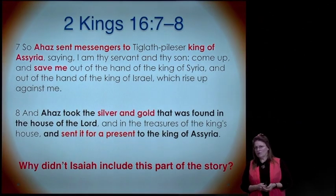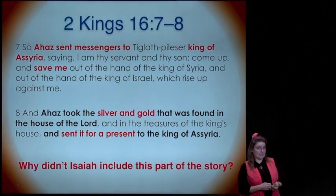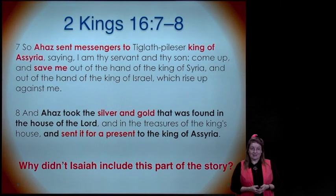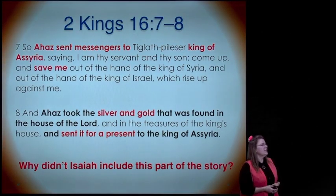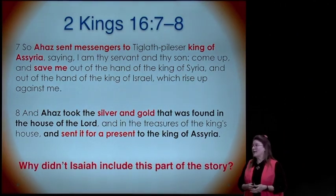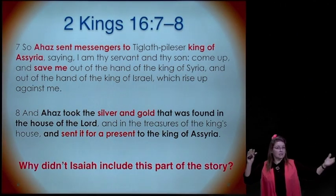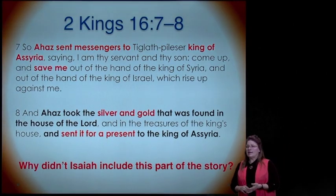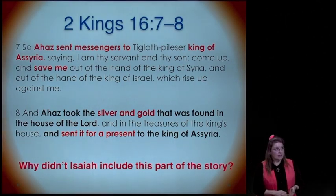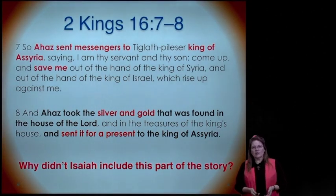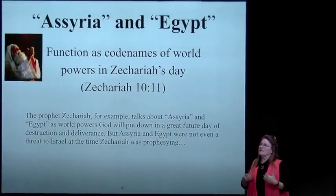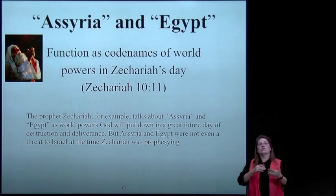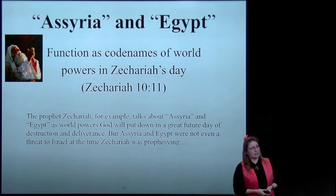Ahaz took the silver and gold from the house of the Lord and the king's house and sent it as a present to the king of Assyria. Why didn't Isaiah include this in the story? We're going to learn this story of Ahaz and King Hezekiah—Isaiah contrasting them with each other in chapters 7, 8, 37, and 38. The point is that Isaiah was selectively choosing what he told us about Ahaz and Hezekiah so that what he said would also be a prediction of the end time.